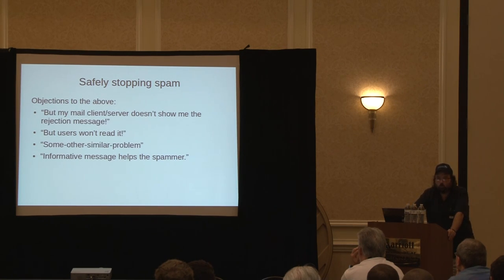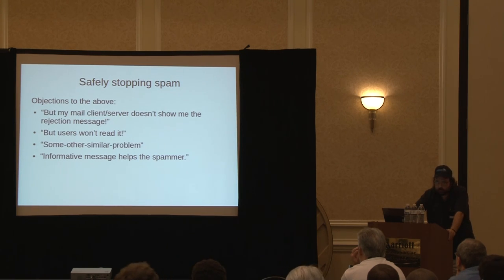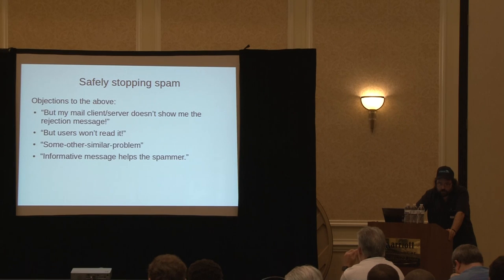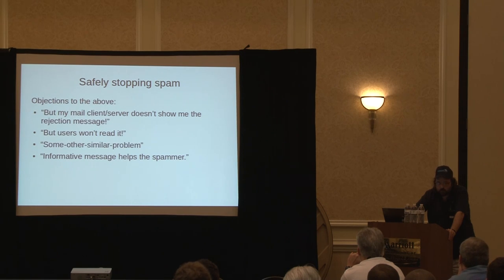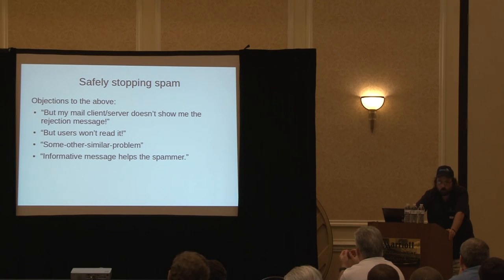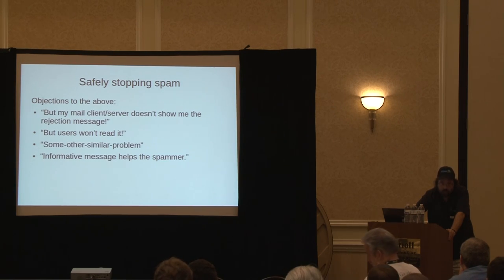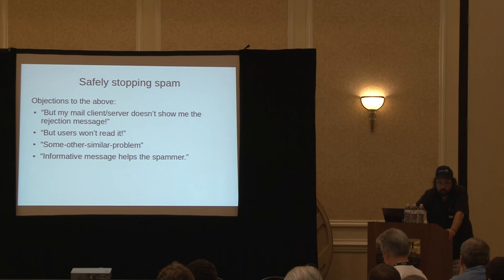You might think that an informative rejection would help the spammer, but that's simply not the case for several reasons. First, most spam zombies aren't even capable of receiving rejection messages and passing them back to the mothership. Even if they were, according to Spamhouse there are maybe a couple hundred of these people worldwide polluting our mail stream — they don't have the time and resources to parse all those messages. Finally, all I have on there is suggestions on how a real user could get to us; there's nothing a spammer could exploit.